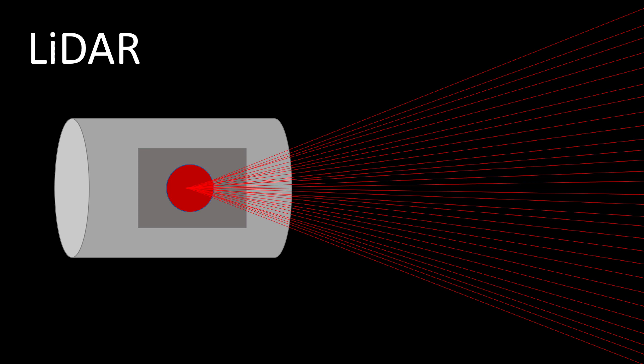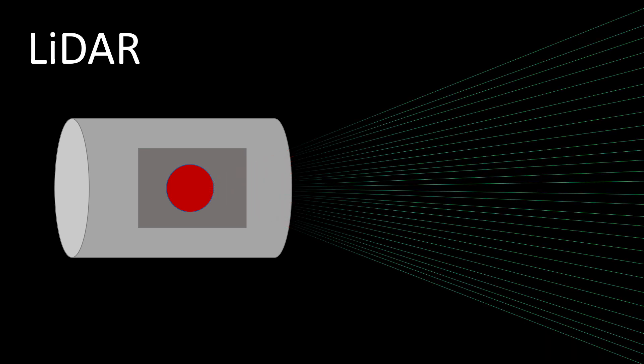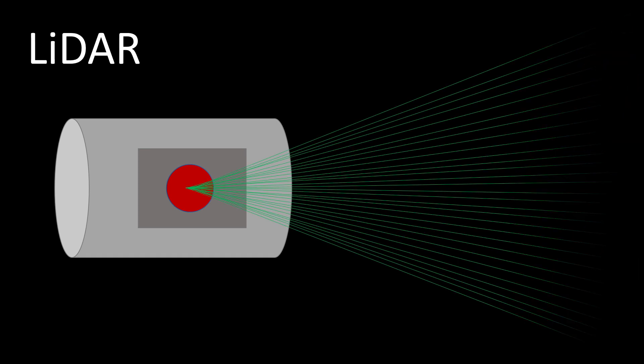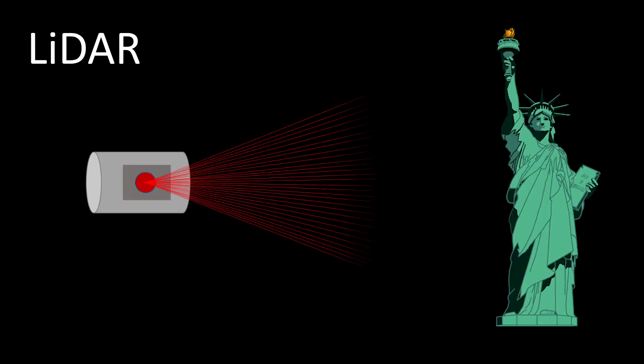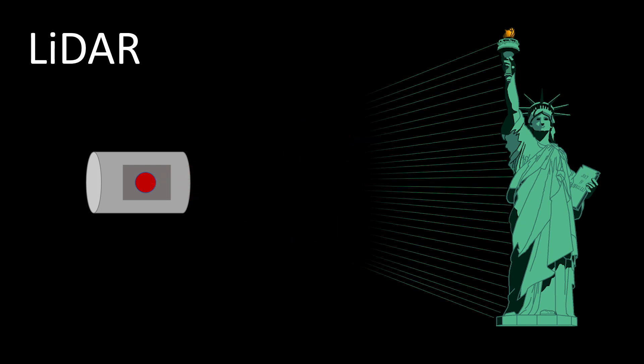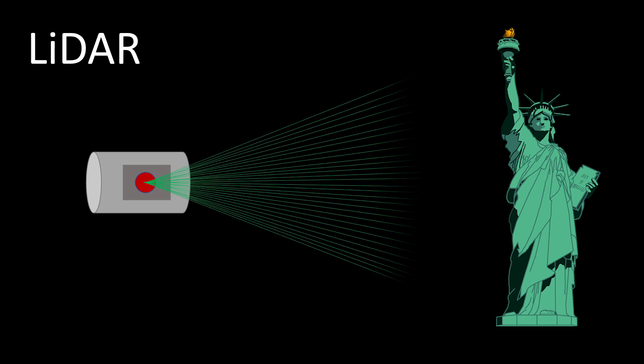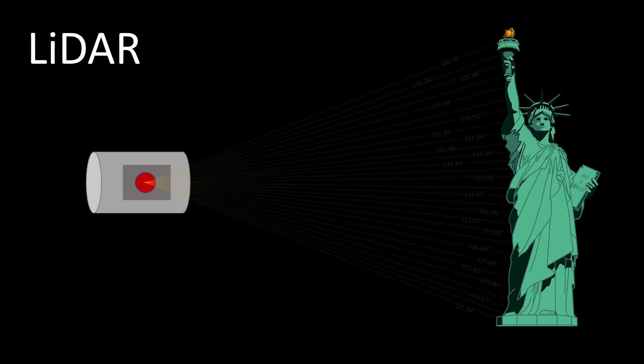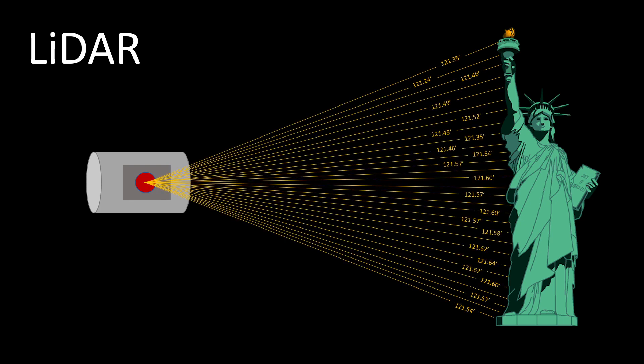Now you might be asking yourself, what is LIDAR? LIDAR stands for Light Detection and Ranging. By using infrared pulses of light, the sensor is able to shoot out a pulse and have it hit an object. The return pulse allows us to calculate the distance between the sensor and the object.